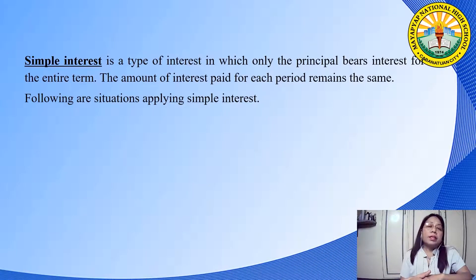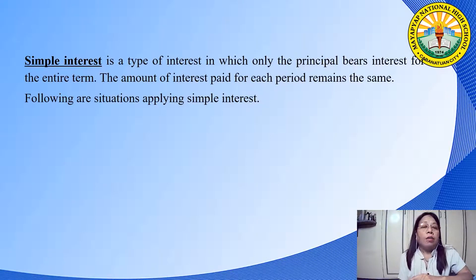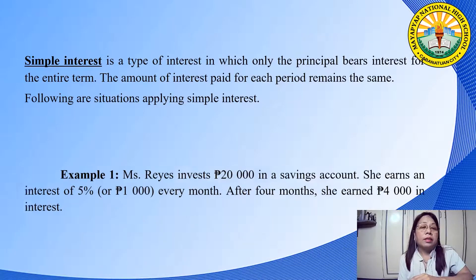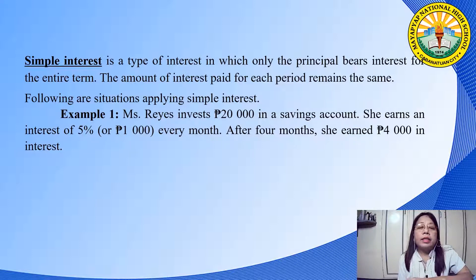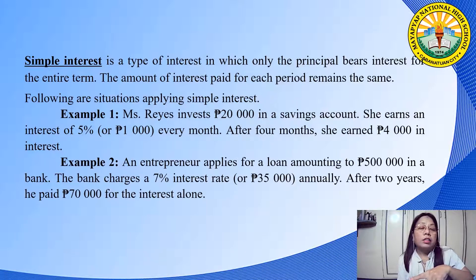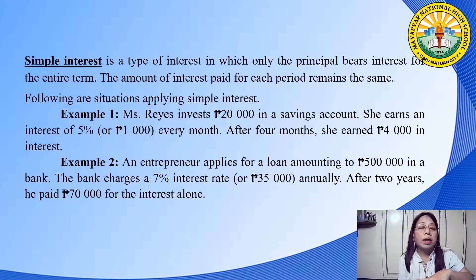Simple interest is a type of interest in which only the principal bears interest for the entire term. The amount of interest paid for each period remains the same. For example, Ms. Reyes invests 20,000 pesos in a savings account and earns an interest of 5%, or 1,000 pesos, every month. After four months, she earned 4,000 pesos in interest. In another example, an entrepreneur applies for a loan of 500,000 pesos. The bank charges 7% interest, or 35,000 pesos, annually. After two years, he paid 70,000 pesos in interest alone.